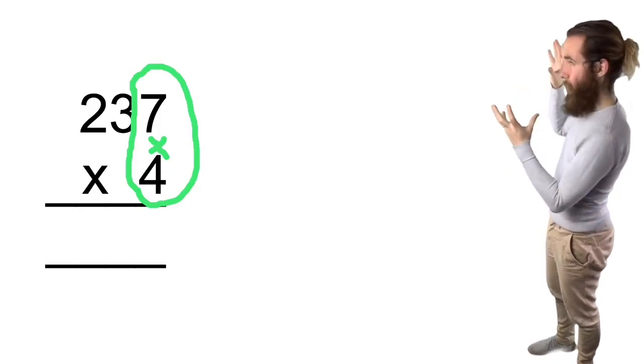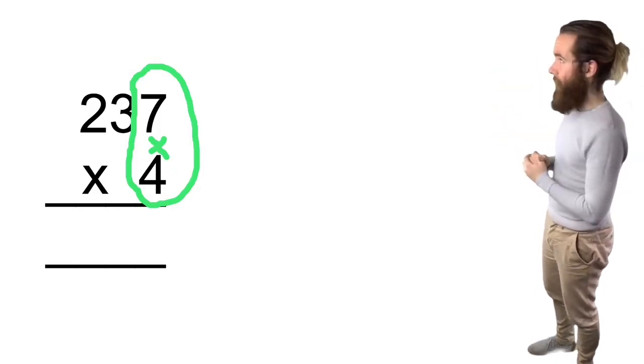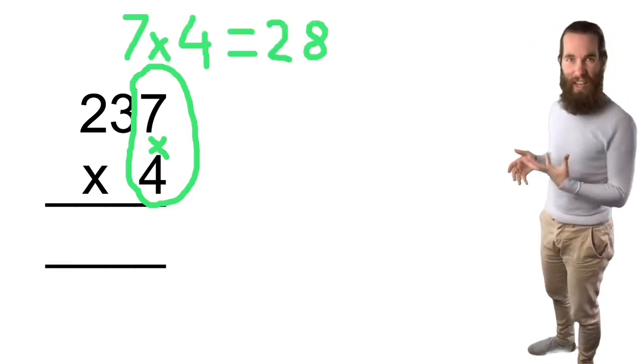So we're multiplying 237 by four. Four we're going to be doing something with every time. We're only going to be looking at one column for the top number each time. So let's start with seven times four, and now using our times table knowledge or a times table chart if you haven't quite memorized them, we know that that is 28.